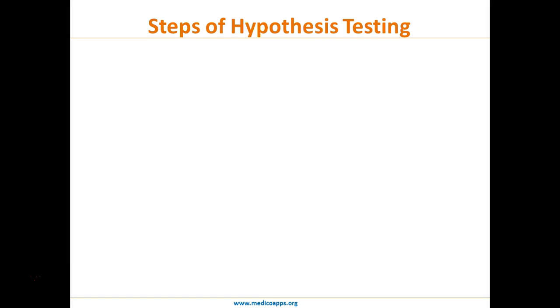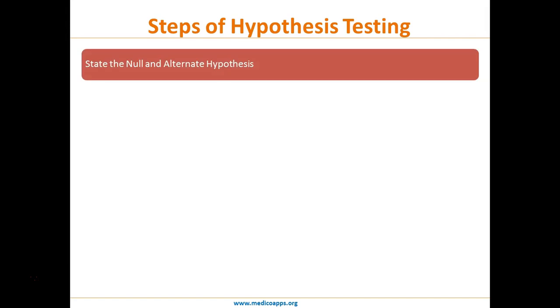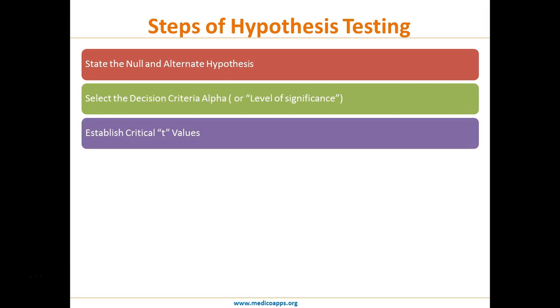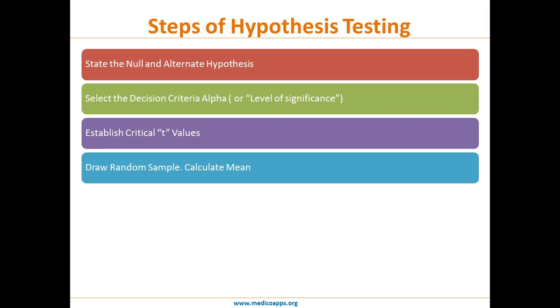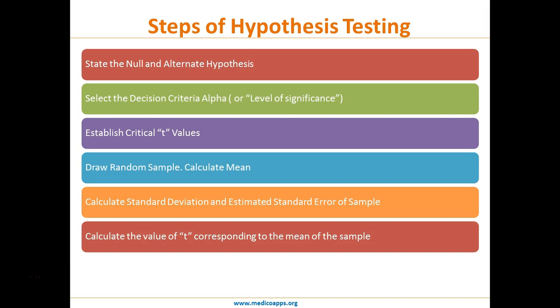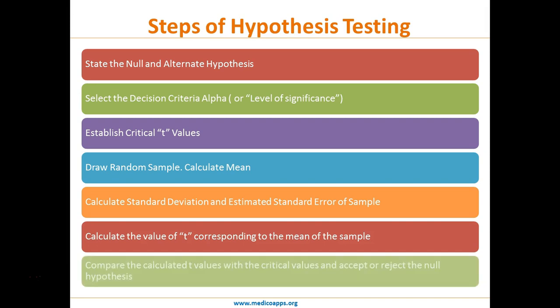Hypothesis testing starts with stating the null and alternate hypothesis. The next step is selecting the decision criteria or level of significance. The third step is establishing critical t-values. Then we draw a random sample and calculate the mean, followed by calculating the standard deviation and standard error of the sample. Finally, we calculate the t-value, compare it with the critical values, and accept or reject the null hypothesis.